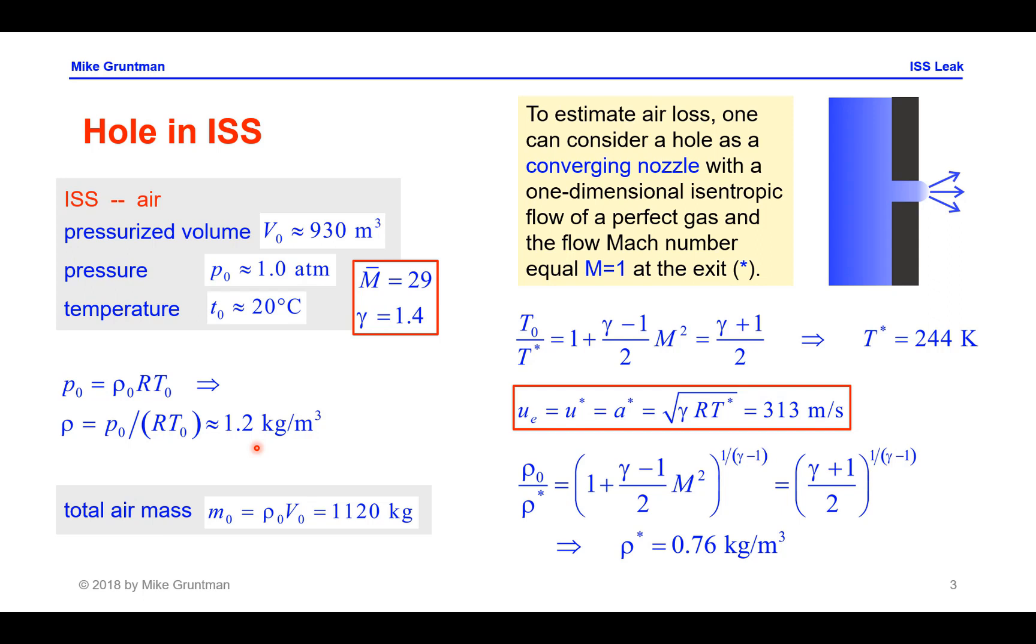To estimate the leak, the mass flow through the hole, we can use a simplification. We can consider a hole as a converging nozzle with a one-dimensional isentropic flow of a perfect gas and the flow Mach number equals 1 at the exit. In reality, a hole is not a converging nozzle, the flow of gas would be a little bit less effective through such a hole and people usually describe such inefficiency through the so-called discharge coefficient. That would be 0.8 or 0.9 in our case, but for our purposes to make an estimate, we can use the assumption of a converging nozzle with a one-dimensional flow.